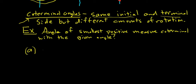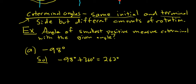Example A: negative 98 degrees. We want the smallest possible positive angle coterminal with this. All you have to do is take negative 98 and add 360. That gives us 262 degrees. This angle and negative 98 differ by 360, so they have the same initial and terminal side — therefore they are coterminal. And this is the smallest one, because if we add 360 again, we get a bigger angle.